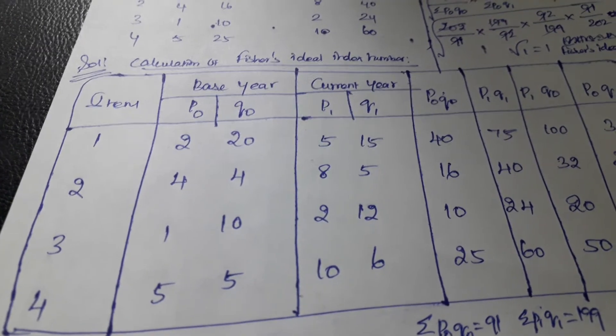Then we need to total them: summation P0Q0, summation P1Q1, summation P1Q0, and summation P0Q1. First we calculate P1Q1 compared to the base year price P0.